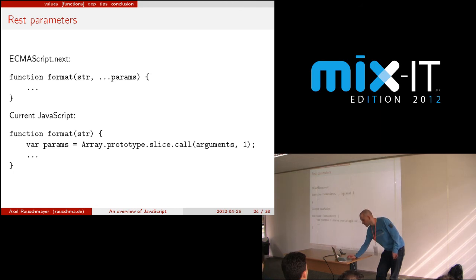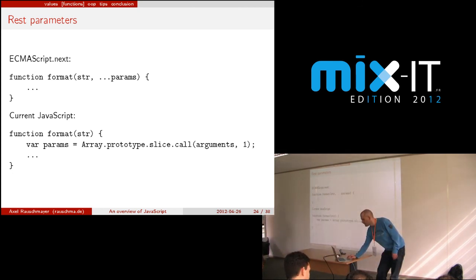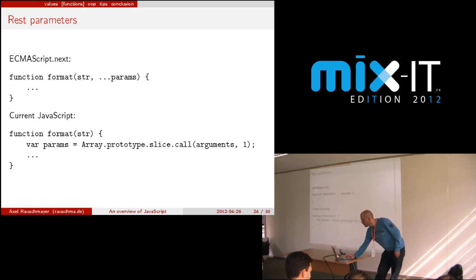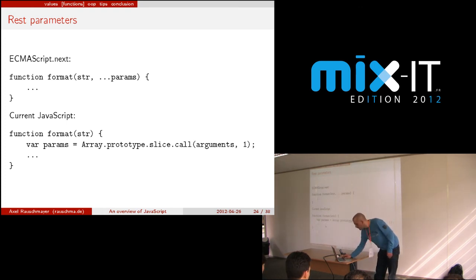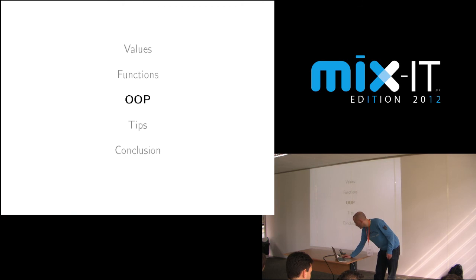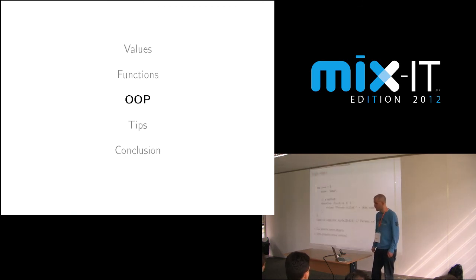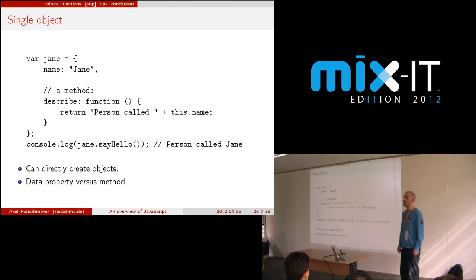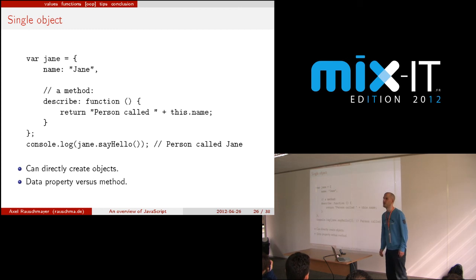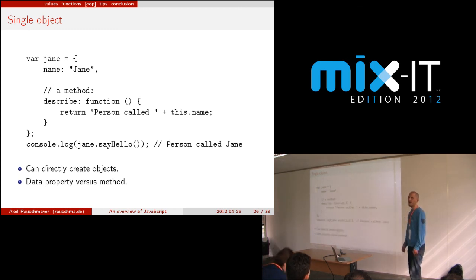So far we've only worked with single objects. That's nice for experimentation — you start with the concrete and introduce abstractions later. Let's say you've created Jane and now you want to introduce John as well, and the last name is always Doe. These two objects basically do the same thing — they both have the same method. You'd want the two objects to share this describe method — the same code doesn't have to be in each object.